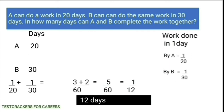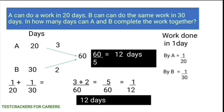We can also solve this by taking the LCM of 20 and 30, which is 60. 60 is the total units of work which has to be done by A and B. In 1 day, A can do 3 units of work and B can do 2 units of work. Totally, A and B can do 5 units of work in a day. So they can complete 60 units of work in 12 days.